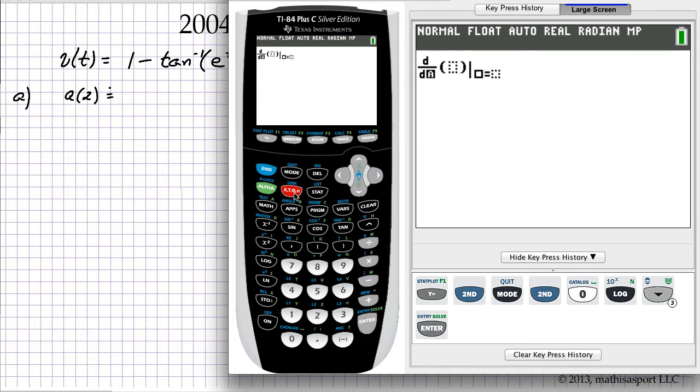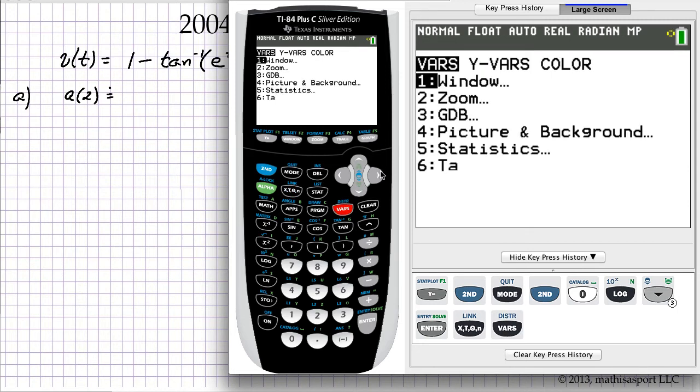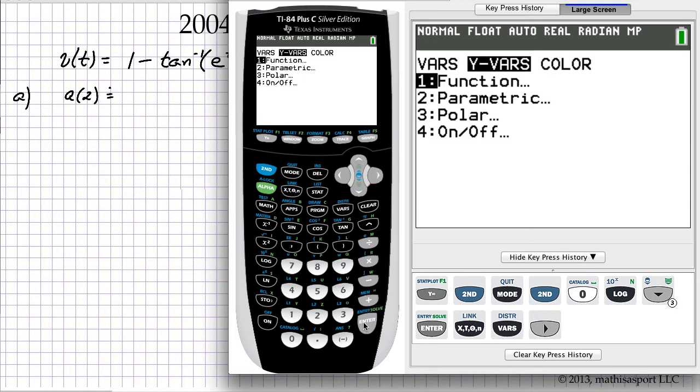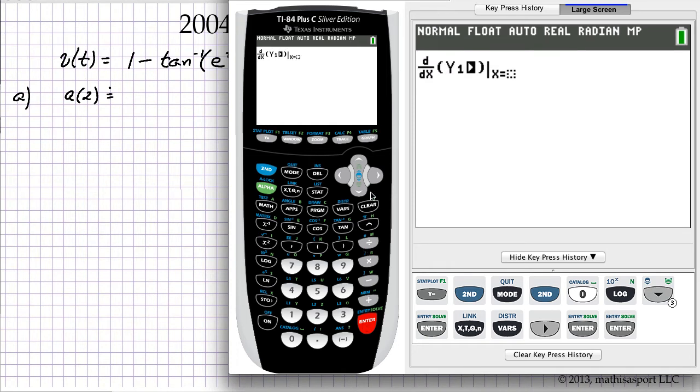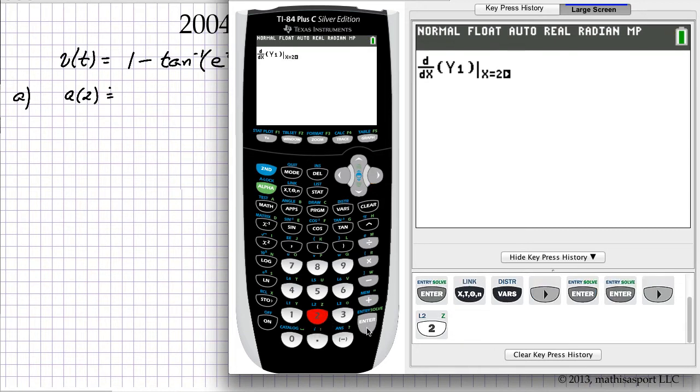And so all that's left is for us to simply invoke the numerical derivative function. Our variable is x, our function is y1, and we're evaluating it at x equals 2 since we used x as our variable in lieu of t.